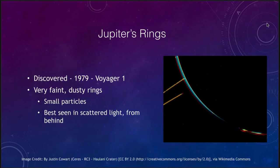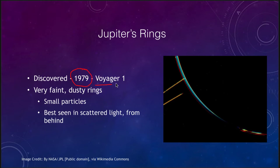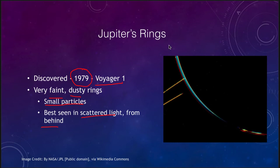Let's look at the rings of each of these planets, starting with Jupiter's rings, which were discovered in 1979 by the Voyager 1 spacecraft. They are very faint and dusty rings made up of lots of small particles and are best seen in scattered light from behind. We don't see them well from Earth because they're not reflecting a lot of light, but they do scatter light through. Looking from behind Jupiter as seen by Voyager 1, we can see the very thin illuminated ring going around Jupiter. Jupiter does have this very faint ring, but not a lot of detail.